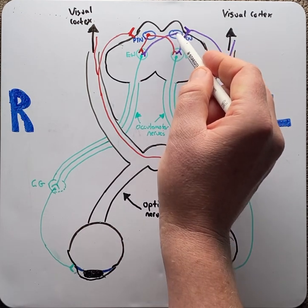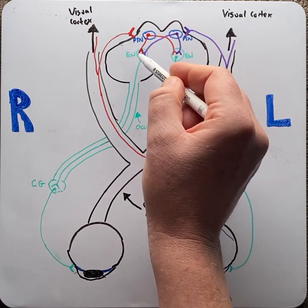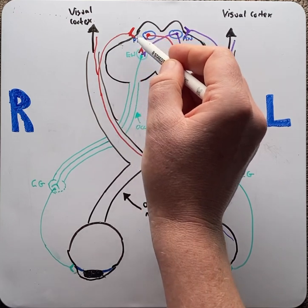But because we had bilateral innervation which sent information across to the right Edinger-Westphal as well as the nasal fibers that crossed over,